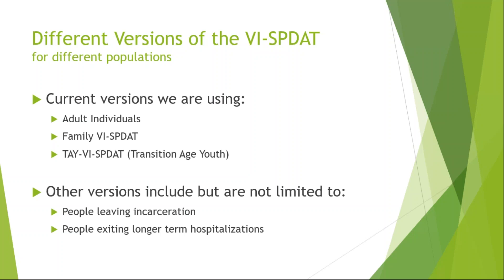There are different versions of the VI-SPDAT for different populations. Currently we are using three different ones: we have the adult individuals VI-SPDAT, we have the family VI-SPDAT, and we also have the TAY VI-SPDAT, which is for transition age youth. I have seen in other communities versions for people leaving incarceration or exiting longer-term hospitalizations — it's about what the need is in your community and figuring out which VI-SPDAT goes best with that population.